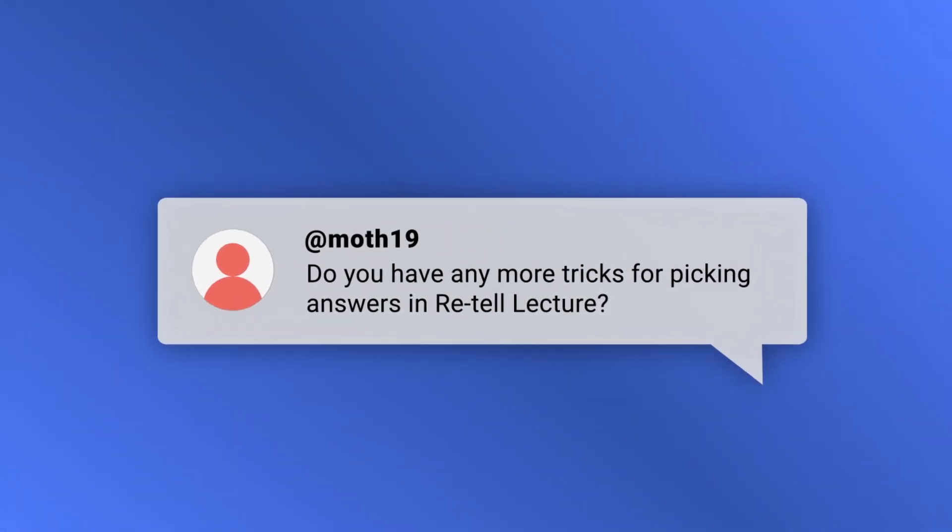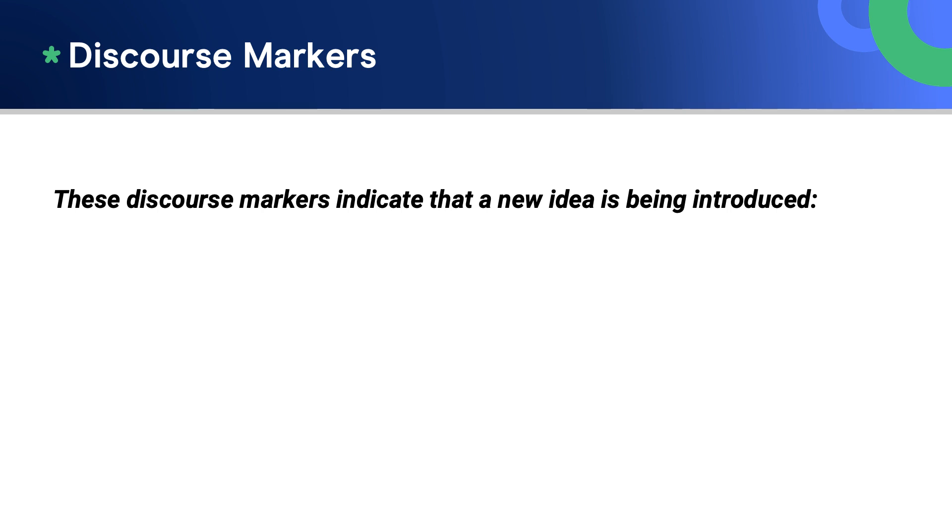Do you have any more tricks for picking answers in retell lecture? A simple trick is to listen out for the main ideas that appear throughout the lecture. You will need around six main ideas and these will be spread fairly evenly through the audio. The speaker may use discourse markers such as 'next,' 'and then,' and 'however' — these indicate a new idea is being introduced. Listen for the first main idea, then listen for the introduction of the next, and repeat until you've noted every main idea.